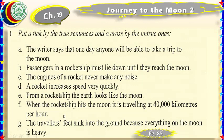Dear students, we have read the lesson. I think you have got some idea about the moon — how is the land over there, and what do we feel when we are on the moon? In this exercise, we are asked to put a tick by the true sentences and a cross by the untrue ones. Statement one: 'The writer says that one day anyone will be able to take a trip to the moon.' Yes, that is true.